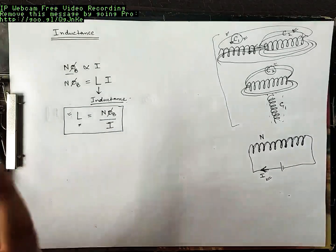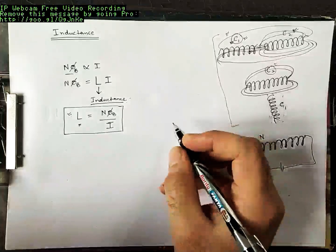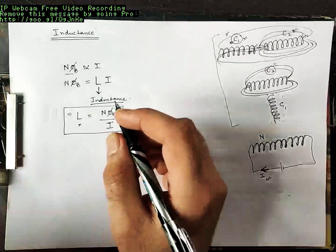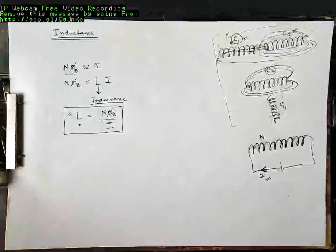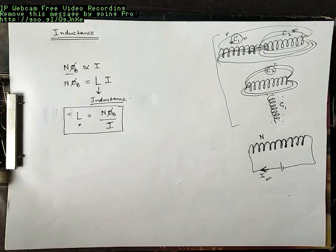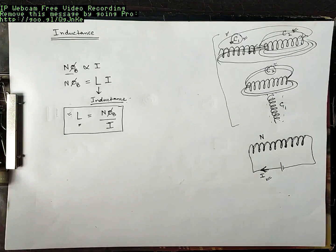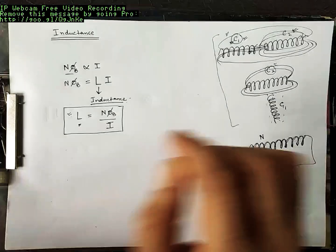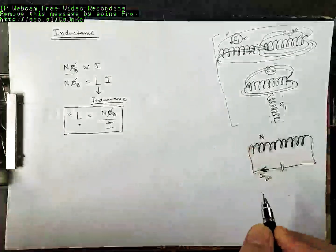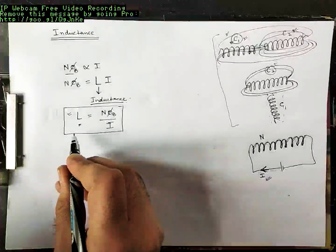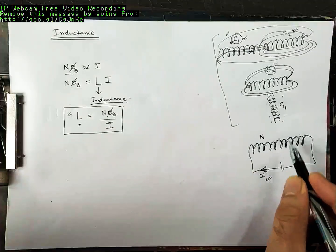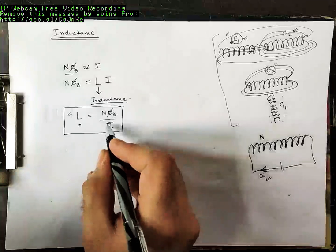We are just trying to define inductance. Inductance is defined as the flux linked to the coil — total flux linked to the coil — divided by the current flowing through it.